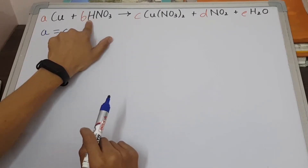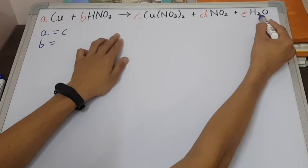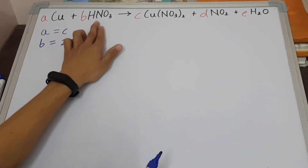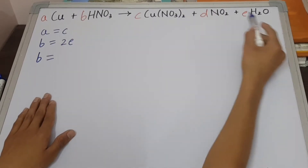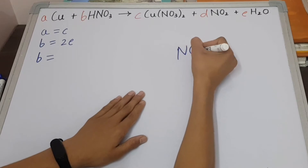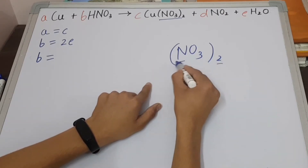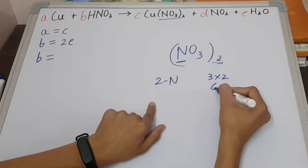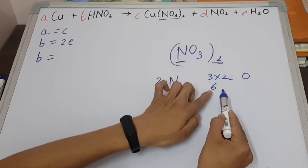Let's go to hydrogen now. We have 1 hydrogen on the reactant side, so simply B, and that equals — now find out the hydrogen on the product side — yes, 2 hydrogen and the coefficient is E, so 2 times E. Now let's go to nitrogen. Again, only 1 nitrogen here, so B. Now see where we have nitrogen on the product side. We have NO3 whole twice — what does this mean? It means there are 2 nitrogen, and 3 times 2 gives us 6 oxygen.